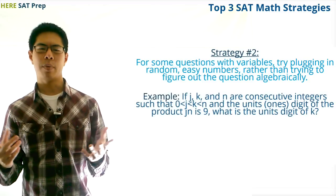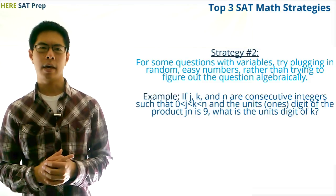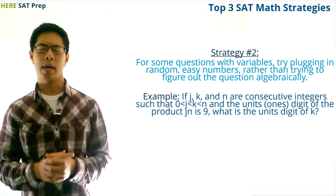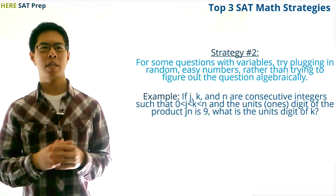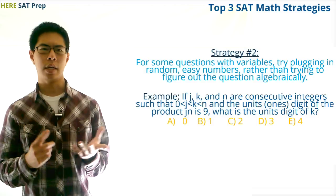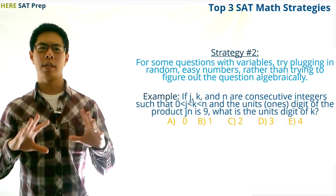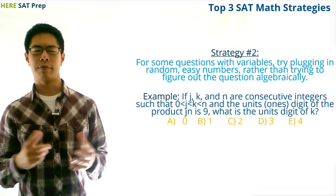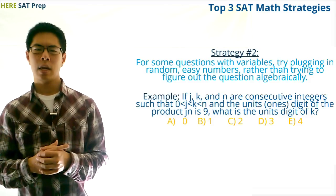Let's take a look at an example where this strategy can be really helpful. First, take a look at this question. If j, k, and n are consecutive integers such that 0 is less than j, and j is less than k, and k is less than n, and the units or ones digit of the product jn is 9, what is the units digit of k? Our choices are 0, 1, 2, 3, and 4. So, when we read this question, the first thing we should note is that it mentions three consecutive integers. When we see something like this, we should immediately recognize that this gives us really good direction for trying random numbers, since we know that we need to pick three consecutive ones, and there's only a limited number of those.